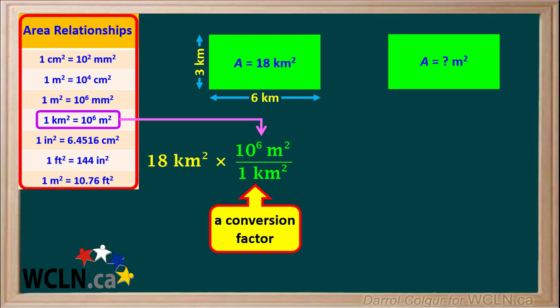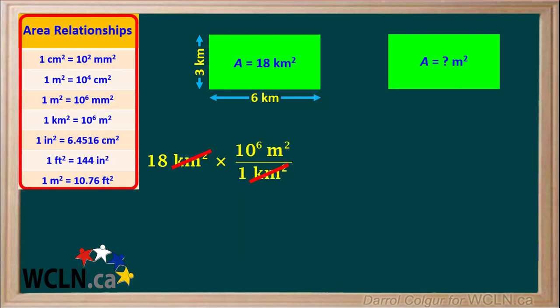and meters squared. It is 10 to the 6th meters squared per 1 kilometer squared. Kilometers squared can be cancelled. We multiply 18 times 10 to the 6th meters squared to get 18 times 10 to the 6th meters squared.